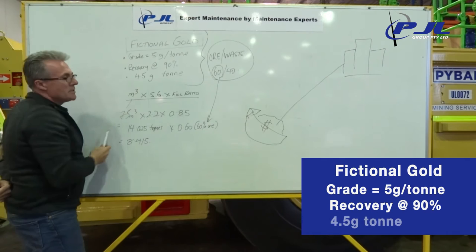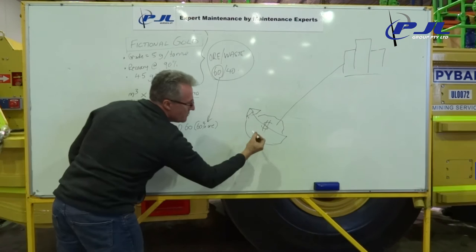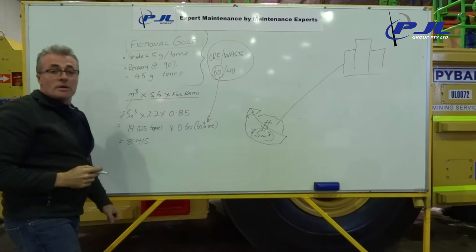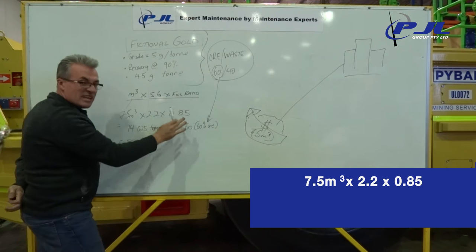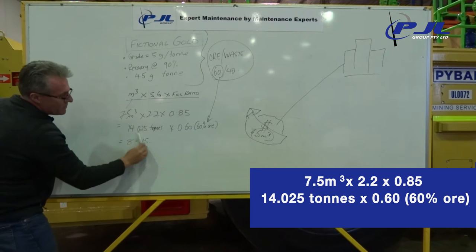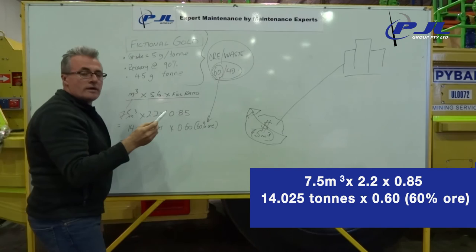This bucket we've said is a seven and a half meters cubed bucket. We've worked out how much dirt in this bucket. Seven and a half meters cubed, the specific gravity of 2.2, multiply that by fill ratio. You fill it about 85% of the time and you fill it to 85%. So 14 tonnes. I've got a 60-40 split in this mine of ore versus waste. So 60% of that is ore. So we've got 8.415 tonnes of ore.